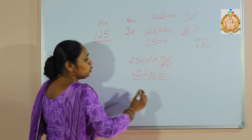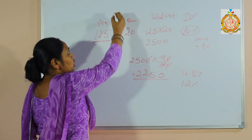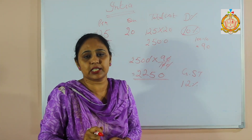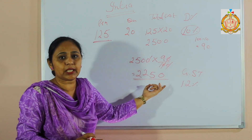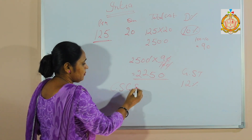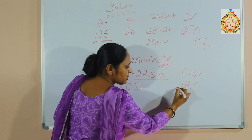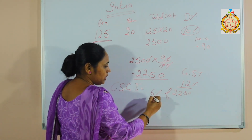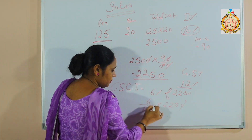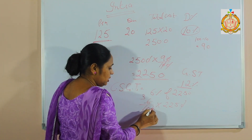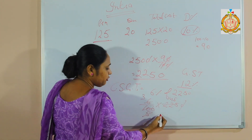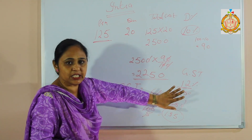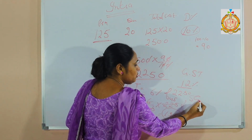GST given is 12%. But since the condition is intra, I have to find CGST and SGST — each being half of the total GST. So I find 6% of 2250 for CGST. Calculating: 6% of 2250 = 135. So CGST is 135. Since SGST is also 6%, it is also 135.